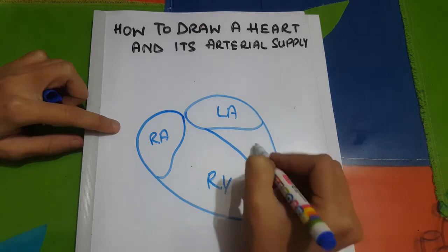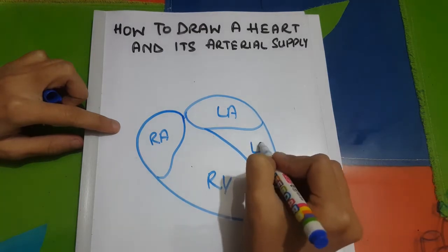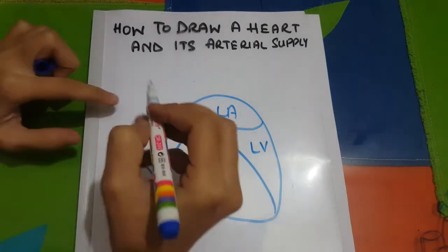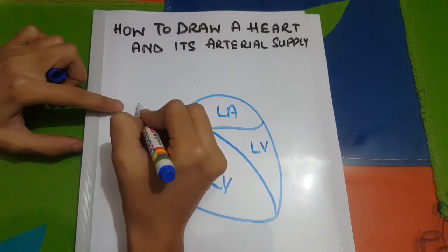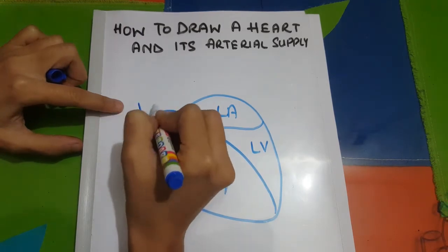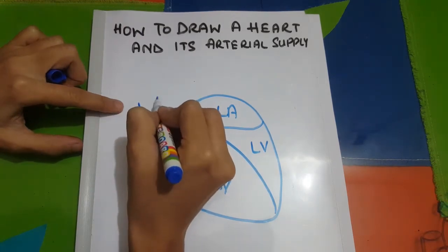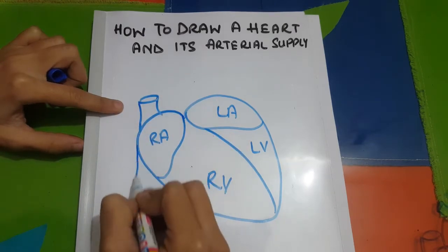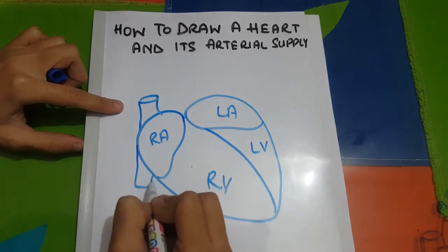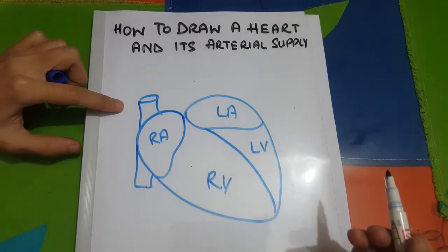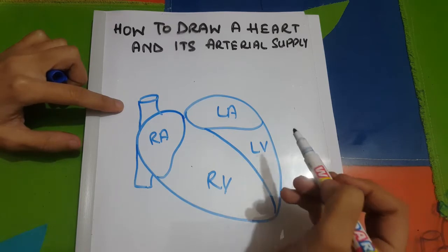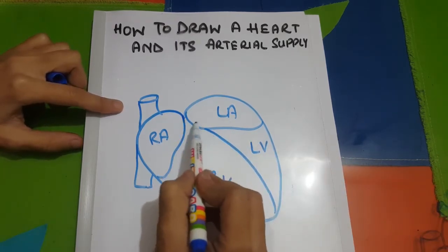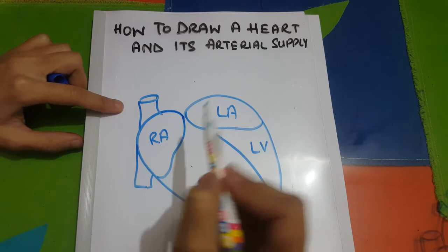This is the right ventricle and this is the left ventricle. In the right atrium, the superior vena cava and inferior vena cava enter. This is the superior vena cava and this is the inferior vena cava. Now let's draw the pulmonary trunk, which originates from the right ventricle.